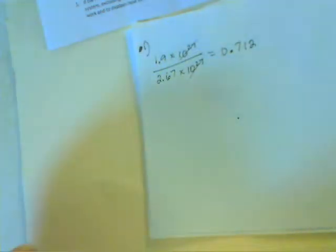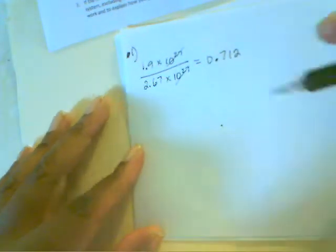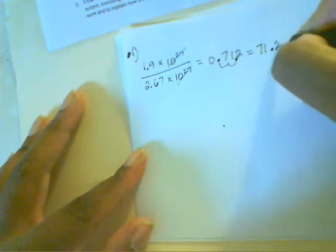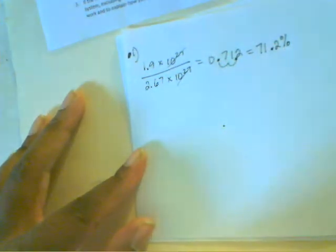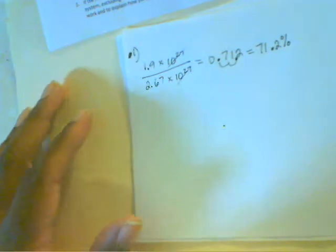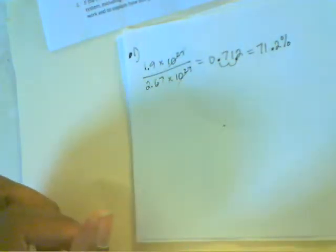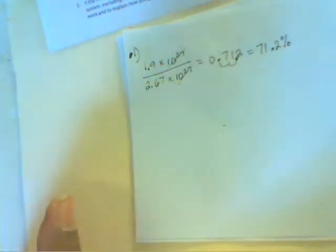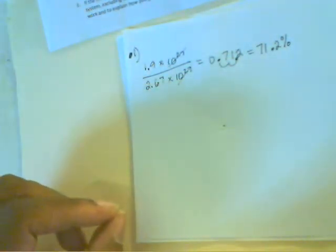0.712 is a decimal. To convert that to a percent, we move the decimal point two places to the right, so the decimal point will be behind the one. It's going to be 71.2, and then we add the percent sign. So 71.2% of the total mass of the solar system, excluding the sun, is Jupiter.